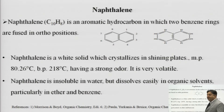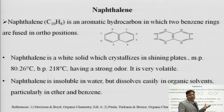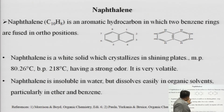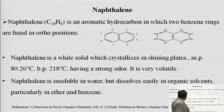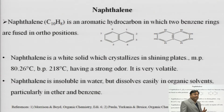Now we come to our topic, naphthalene. As already seen in the classification, naphthalene is a linear fused polynuclear hydrocarbon - it has two benzene rings fused at the ortho position. The molecular formula of naphthalene is C₁₀H₈. As the molecular formula suggests, it has 10 carbons but only 8 hydrogens, which clearly indicates that naphthalene is a very unsaturated compound.